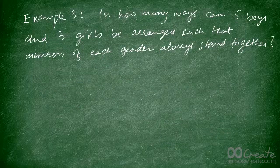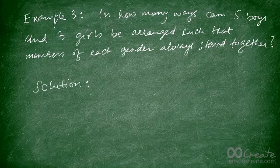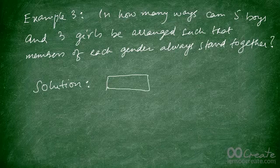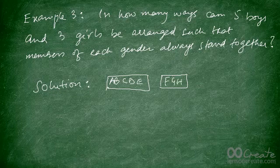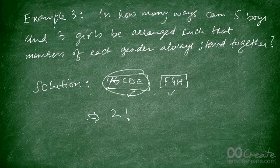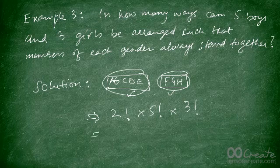Here's another example. In how many ways can five boys and three girls be arranged such that members of each gender always stand together? You have five boys — call them A, B, C, D, E — as one object, and three girls F, G, H as a single object, giving two objects total. Their arrangements are two factorial. But five boys can be arranged within themselves in five factorial ways, and the three girls in three factorial ways. So the answer is 2! × 5! × 3! = 2 × 120 × 6 = 1,440.